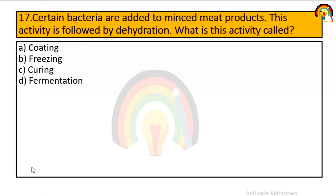Certain bacteria are added to minced meat products and this activity is followed by dehydration or removal of water. What is this activity called? Coating, freezing, curing, or fermentation? This process is called fermentation.